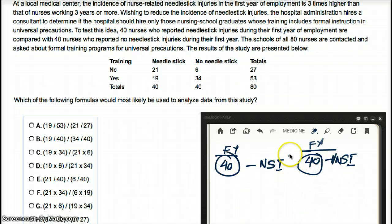Just getting an idea of the question, right? The schools of all 80 nurses are contacted and asked about formal training programs for universal precautions. The results of the study are presented below. Which of the following formulas would most likely be used to analyze data from this study?